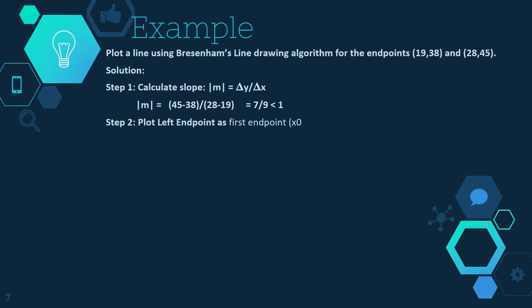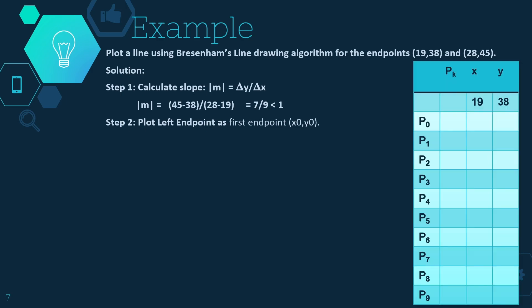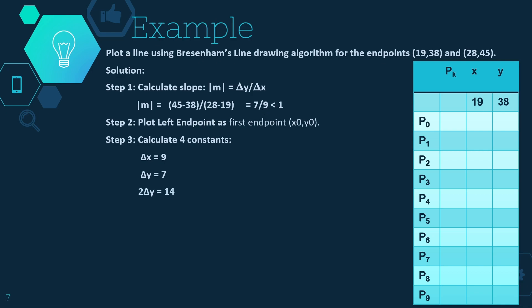Step two: plot the left endpoint as the first endpoint x0, y0, which is (19, 38). Step three: calculate the four constants. Delta x is 9, delta y is 7, 2 delta y is 2 × 7 = 14, and 2 delta y minus 2 delta x is 14 minus 18 = minus 4.